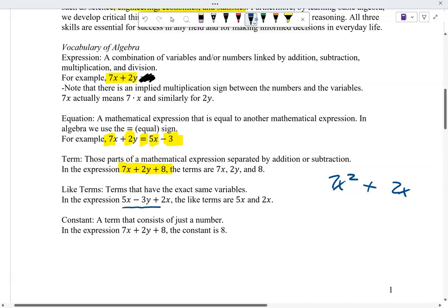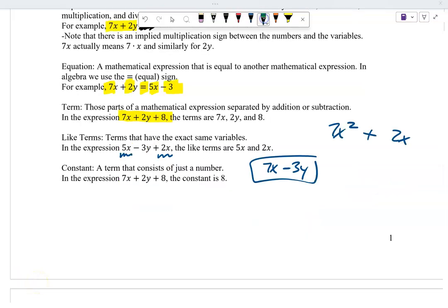In this expression right here, 5x minus 3y plus 2x, the only like terms are 5x and 2x. So if we were adding and subtracting that, I'd have, well, that'd be 7x minus 3y. I would add the 5x plus the 2x.